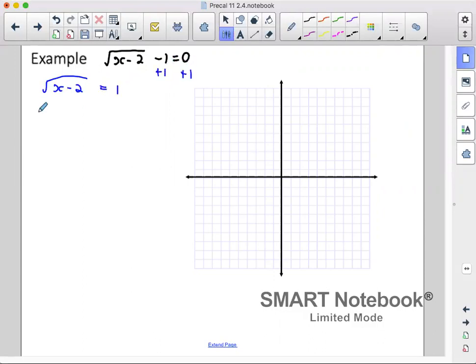At this point, I change that into two separate equations. So we've got y equals the square root of x minus 2 and y equals 1.